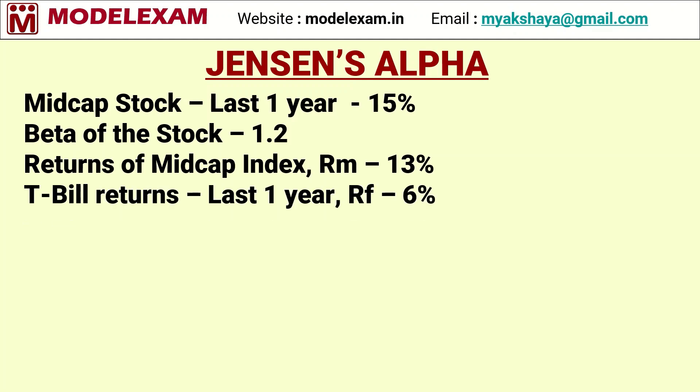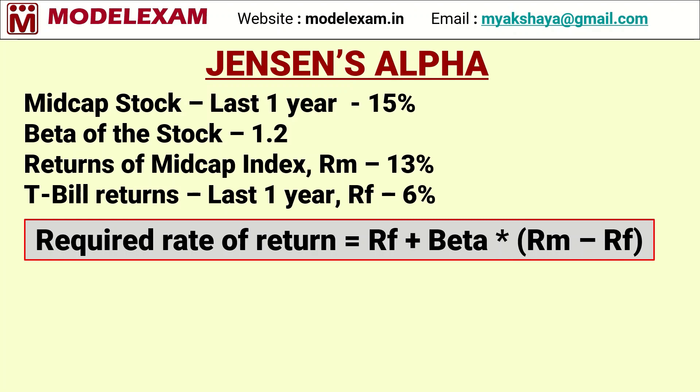Returns from treasury bills over the last one year, let us denote it as RF, risk-free returns, is taken as 6%. Now investors require a minimum rate of return from the stock to compensate for the risk they take. The minimum required rate of return is given by: RF (risk-free return) plus beta multiplied by (RM minus RF).